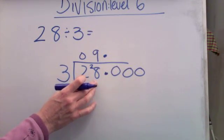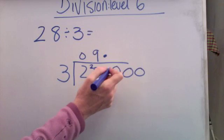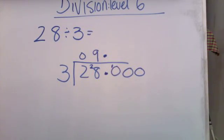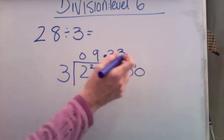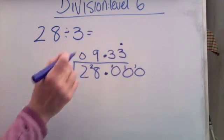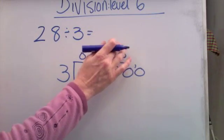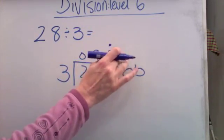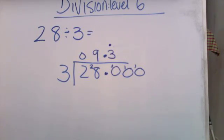Threes into 28 was 9, which is 27 remainder 1. I can now carry on after the decimal point. How many threes in 10? Three, six, nine, that's three remainder 1. How many threes in 10? Three, six, nine, that's three. And you can see that's going to go on forever, so we'll stop there and just put a little dot over to say that it goes on forever. So the answer is 9.3̄.